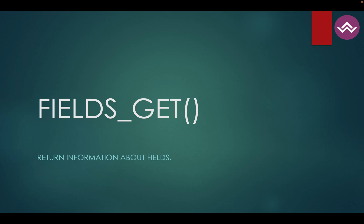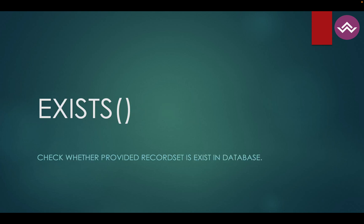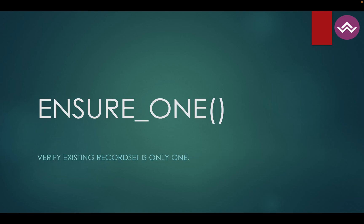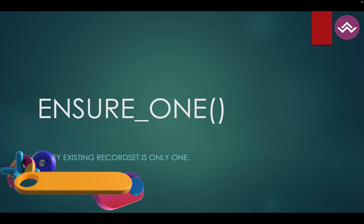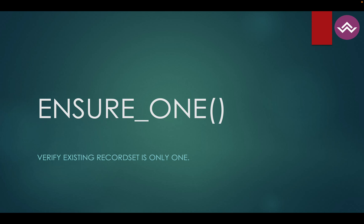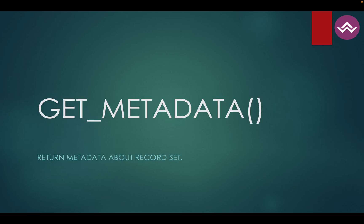With fields_get, for example, if there is a name field of type Char, you get all the attributes you defined at the field level. The exists method is a checkpoint to verify whether a record set actually exists in the database. The ensure_one method is very useful when you want to restrict a method so that self must be exactly one record, not multiple records. The get_metadata method returns the metadata of the record sets — it is rarely used but still important.